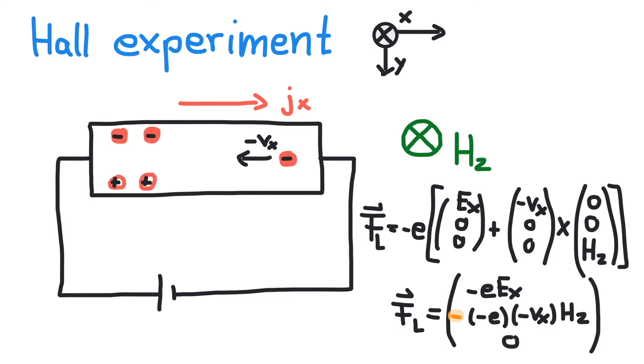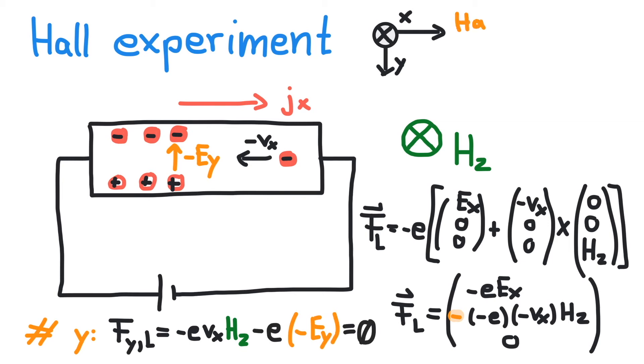A charge imbalance is building up and along with it an electric field pointing in negative y-direction. This process continues until the accumulated electric field completely cancels the Lorentz force. The resulting Hall electric field is negative.